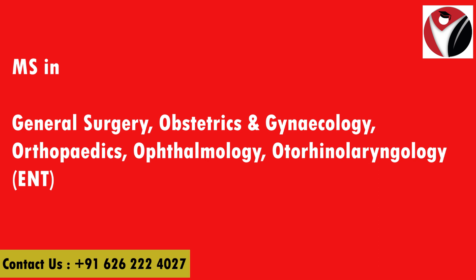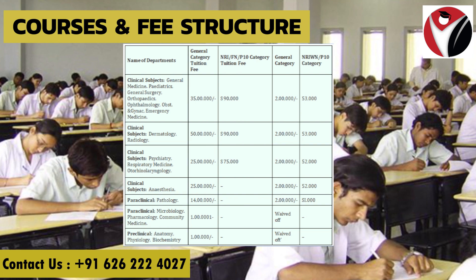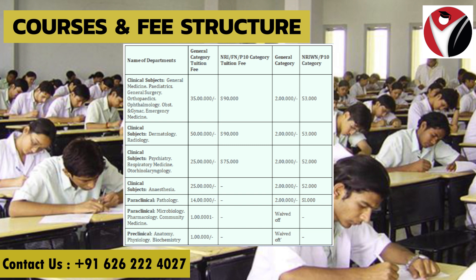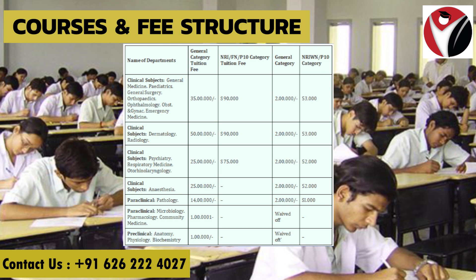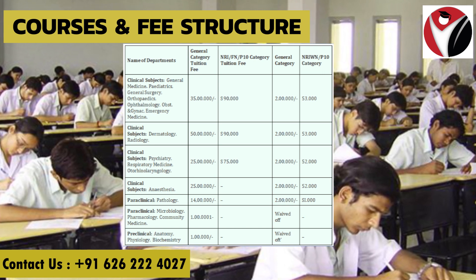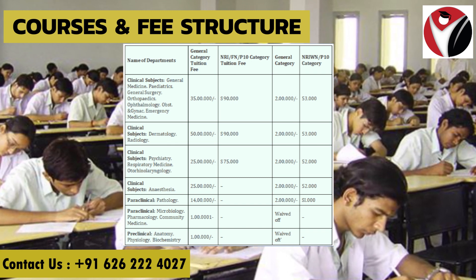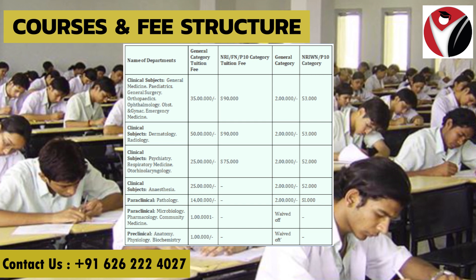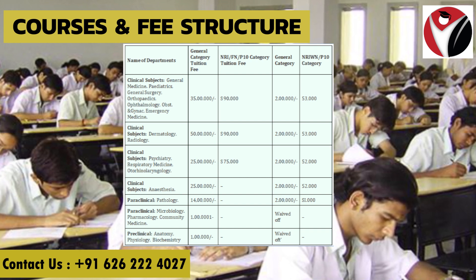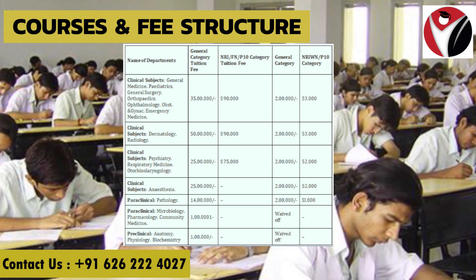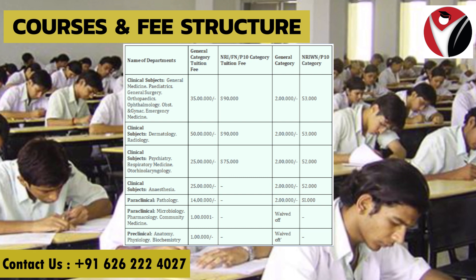Now if we talk about fees: for General Medicine, Pediatrics, General Surgery, Orthopedics, Ophthalmology, and Obstetrics and Gynecology, the tuition fees are 45 lakhs. For clinical subjects like Dermatology and Radiology, the fees are 50 lakhs. For clinical subjects like Psychiatry, Respiratory Medicine, and ENT, fees are 25 lakhs. Anesthesiology also costs 25 lakhs, and paraclinical subjects like Pathology have fees of 14 lakhs. You can also see the full fee structure of all courses displayed on the screen.